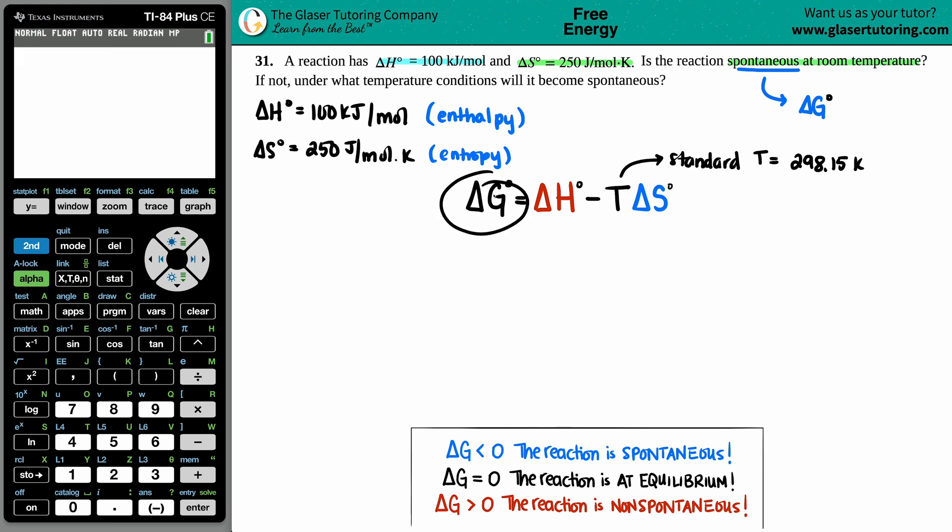Keep in mind we're trying to solve for delta G. Delta G is Gibbs free energy, G for Gibbs, the scientist who invented this concept. That's what we're solving for here. So let's see what's going on.